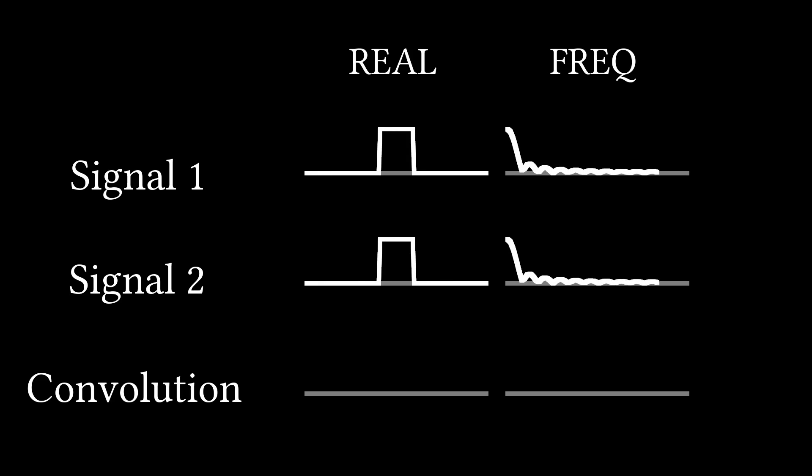So when we convolve two square waves, for example, the outward triangle wraps around to the other side.